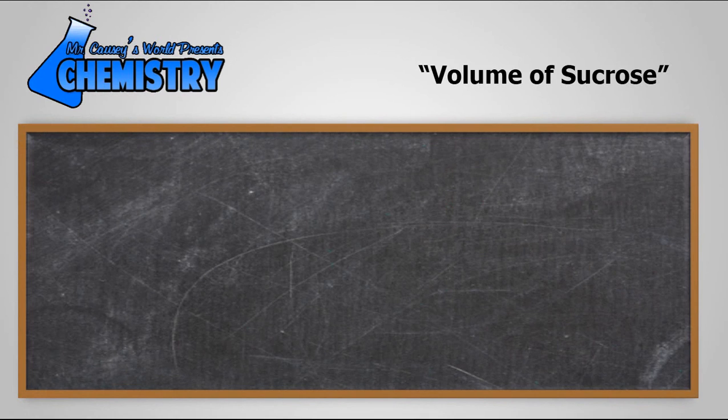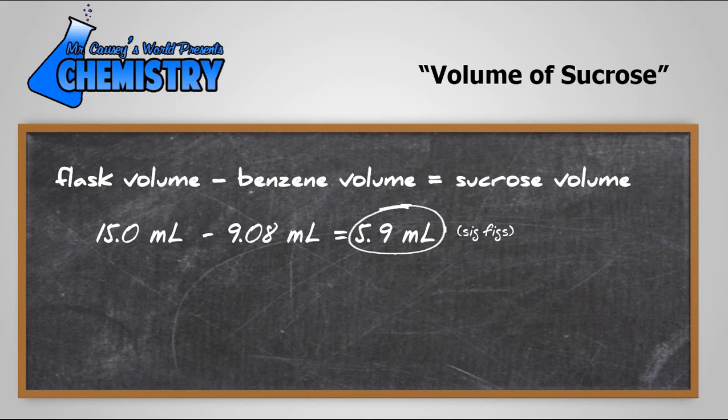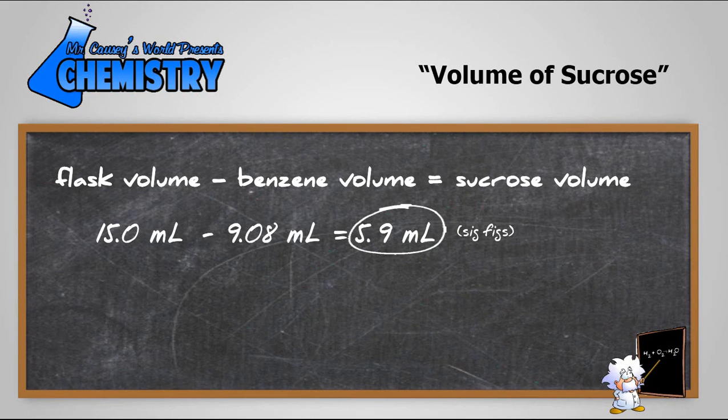Now the volume of sucrose. The flask volume minus the benzene volume will equal the sucrose volume. So 15 milliliters minus 9.08 milliliters will equal 5.9 milliliters considering the sig figs.